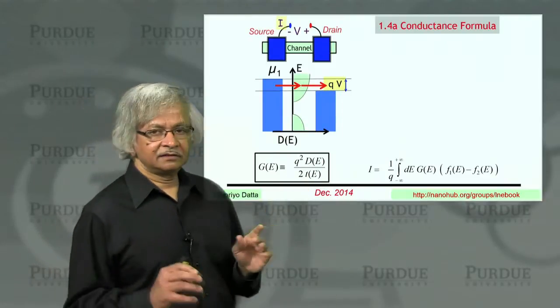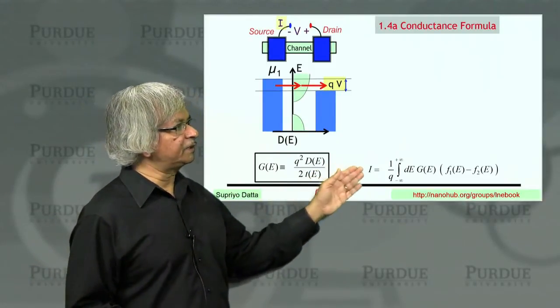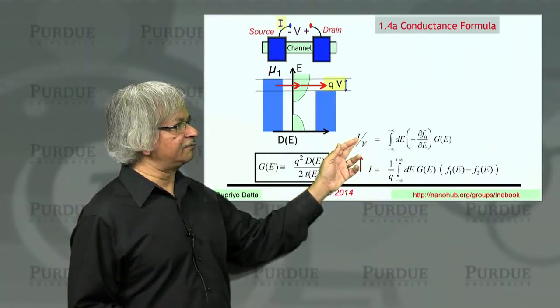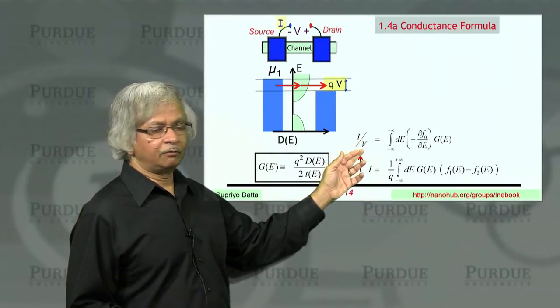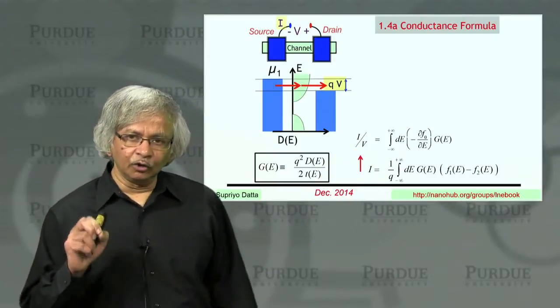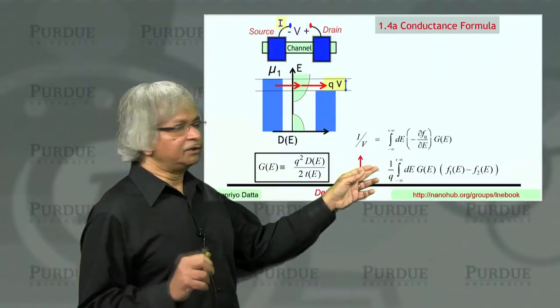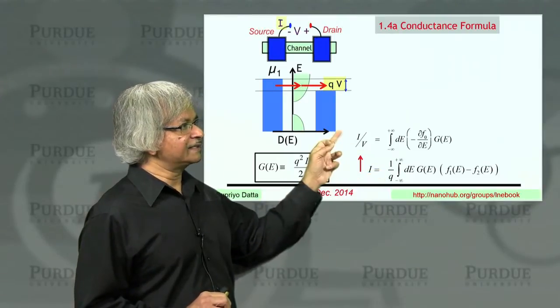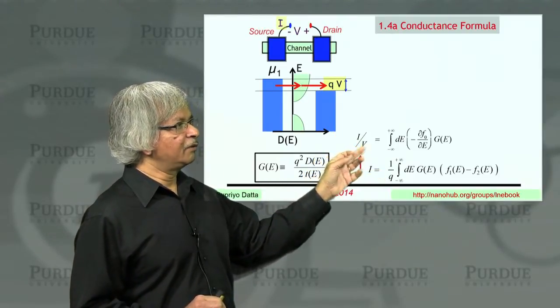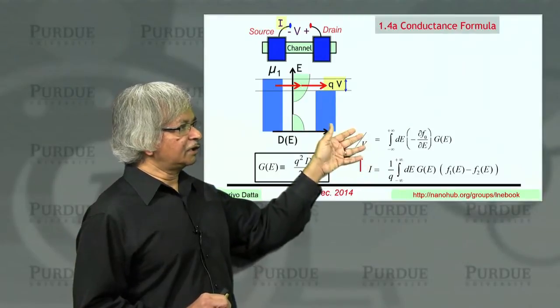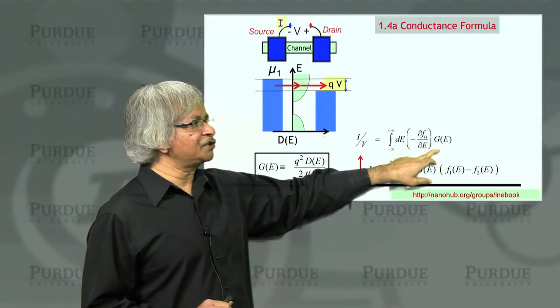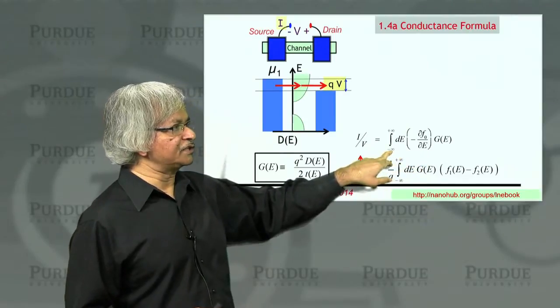Now, what we'll do in this lecture is obtain an expression for the conductance - that is, this current divided by voltage. What we'll show is that for low voltages, you can do an approximate expansion and get this expression for conductance, where the overall conductance is like this conductance function but averaged over energy according to this relation.